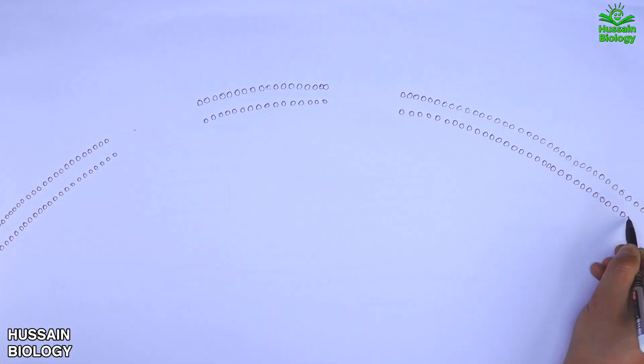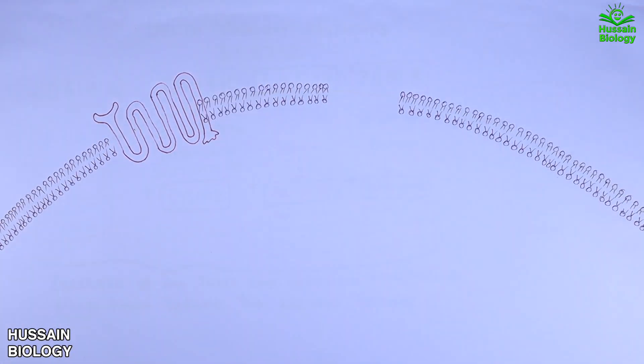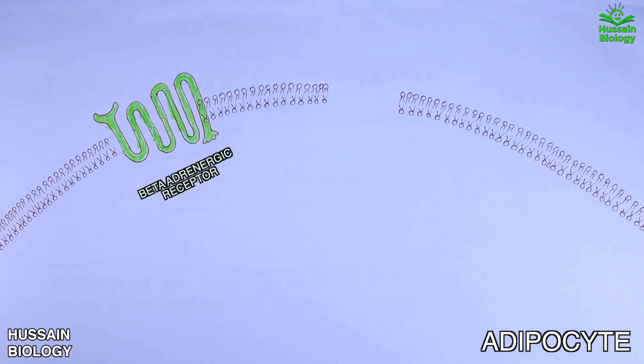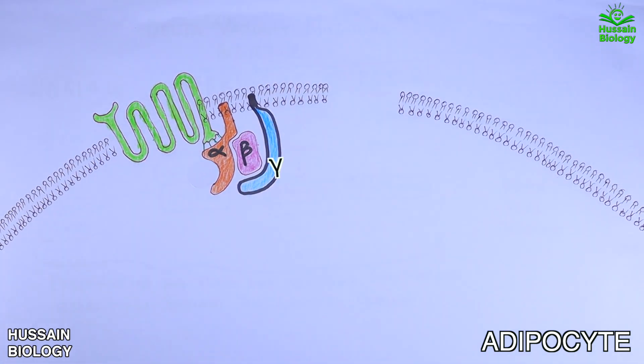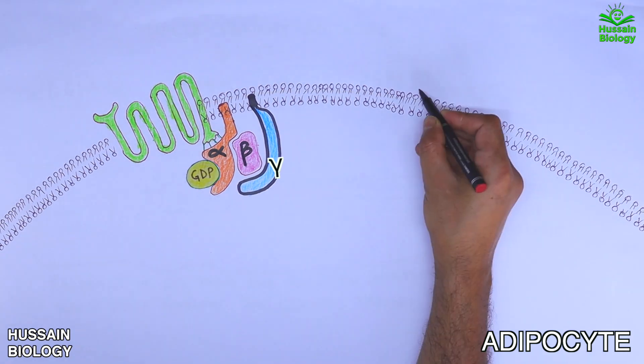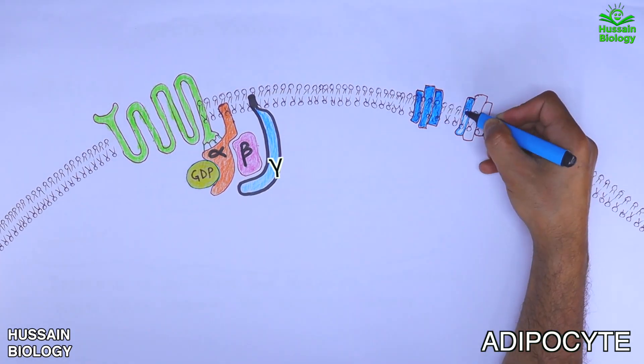Now let's start the pathway. Here we see the adipocyte cell having beta adrenergic receptor with an inactive trimeric G protein bound as alpha, beta and gamma subunits. This G protein is having GDP bound as shown in the diagram. And on the right we have the adenylyl cyclase protein.